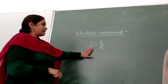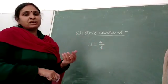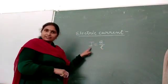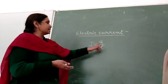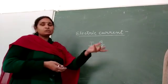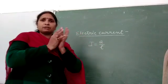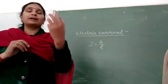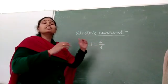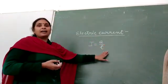Electric current can be defined as I is equal to Q upon T. We can say that the motion of electric charge is known as electric current. We can also say the rate of electric charge is known as electric current. The ratio of charge and time is also known as electric current. So there are many ways to define electric current in terms of electric charge and time.